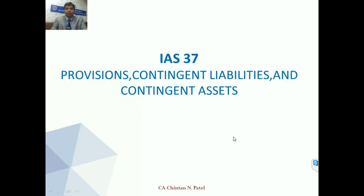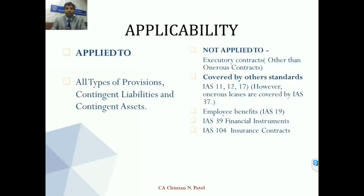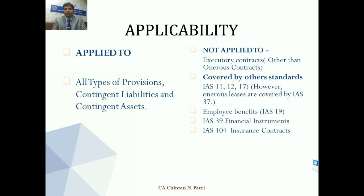The first standard is IAS 37 — Provisions, Contingent Liabilities, and Contingent Assets. Each IFRS standard is structured in a consistent manner: first, objective; second, scope; third, definitions; then recognition principles, measurement principles, and disclosures. Scope is the entry point for applicability of any standard. One of the most important things is to understand whether a standard is applicable to you or not. Once applicable, you simply go through the standard and apply the provisions.